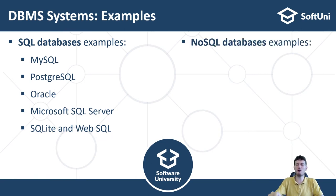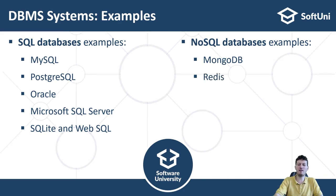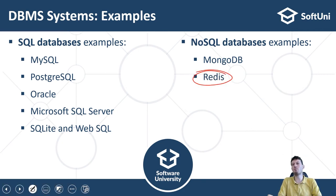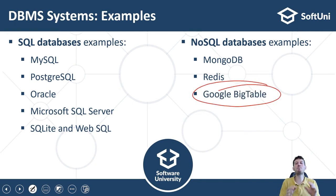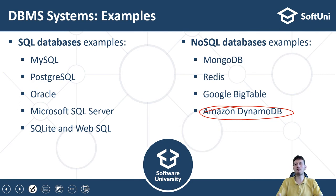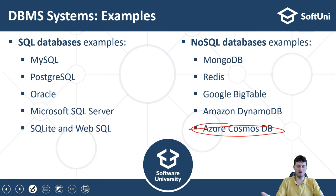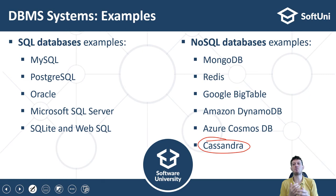Some popular NoSQL databases include: MongoDB — one of the most famous document-based NoSQL databases; Redis — a fast key-value store used for simple projects and data caching; Google Bigtable — high performance, extremely scalable cloud-based key-value store from Google for very large databases; Amazon DynamoDB — high performance, highly scalable cloud-based document-oriented and key-value database from Amazon; Azure Cosmos DB — high performance, extremely scalable cloud-based key-agnostic document-oriented database from Microsoft; and Cassandra — a popular, high performance, highly available wide-column database.